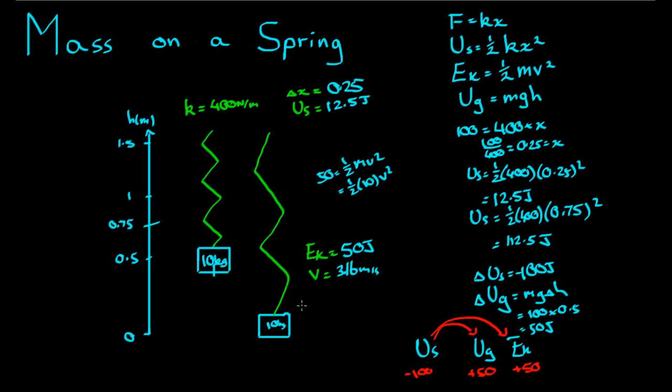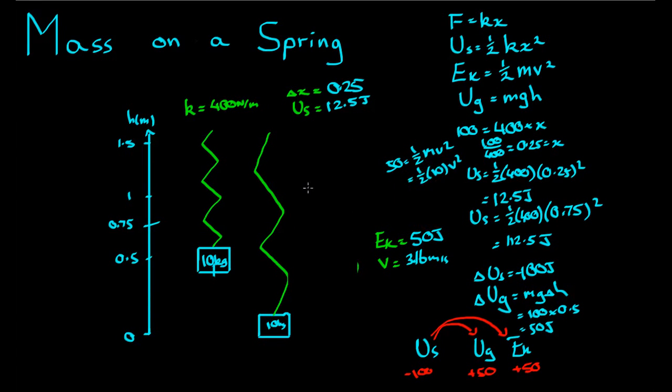And we can also find the max height the box will reach after being pulled down to that point there. The max height will occur when the box ends up somewhere up here. Because we expect it to spring up past that point and then turn around up here. At this point here, we expect the kinetic energy to be 0. Since the box, we do know, has to turn around at that point. If the kinetic energy is 0, then all the other energy has to be tied up in spring potential and gravitational potential.